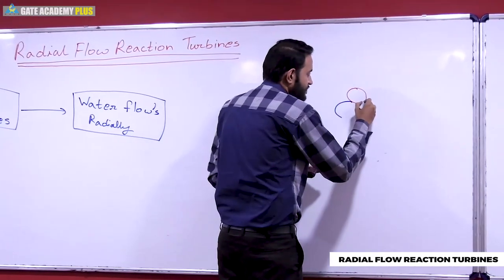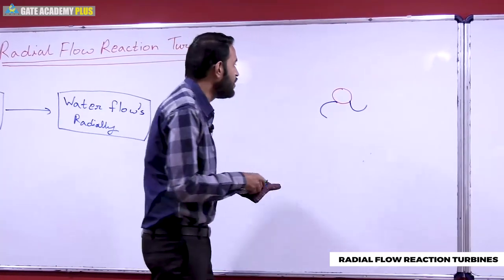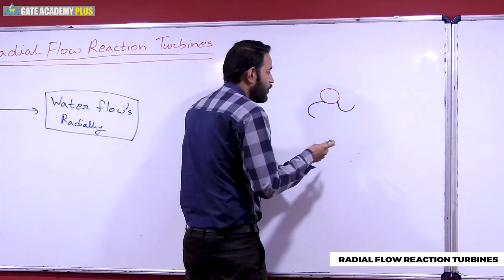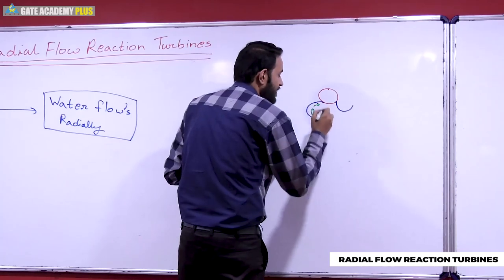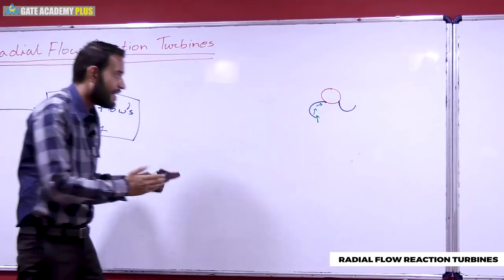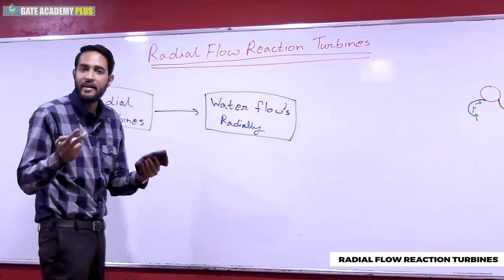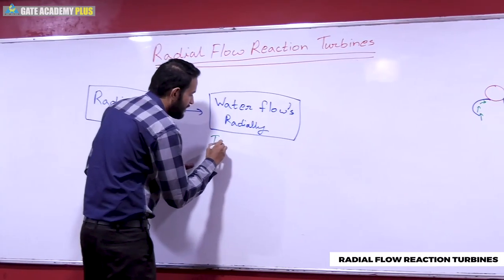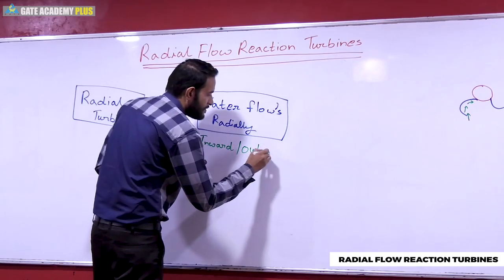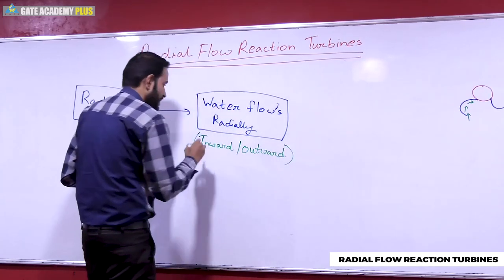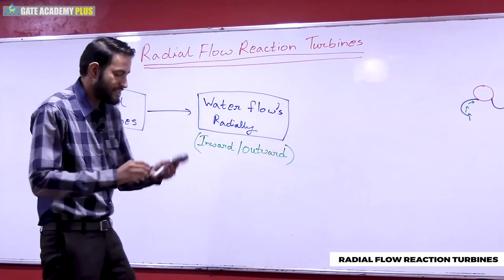These are radial curved vanes — radially curved blades — so water flows radially. Radially means through the radius direction. Radial flow turbines can be of two types: inward flow or outward flow. Radial flow turbines are two different kinds — one is inward, and the other is outward flow.